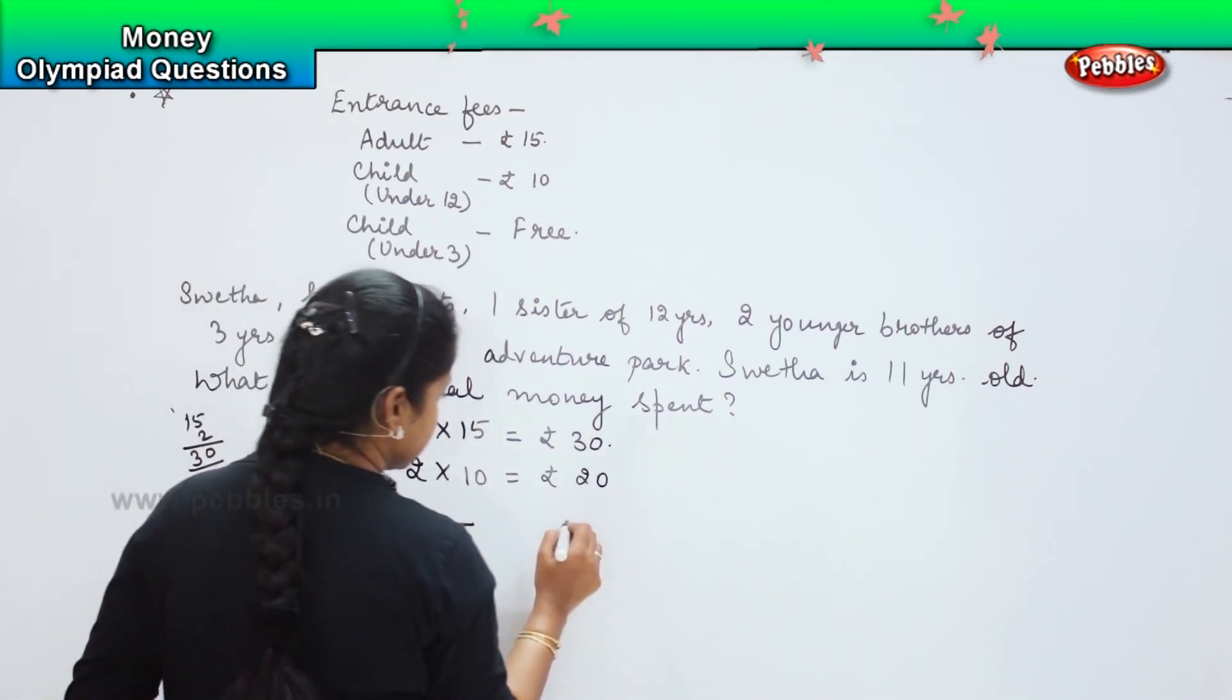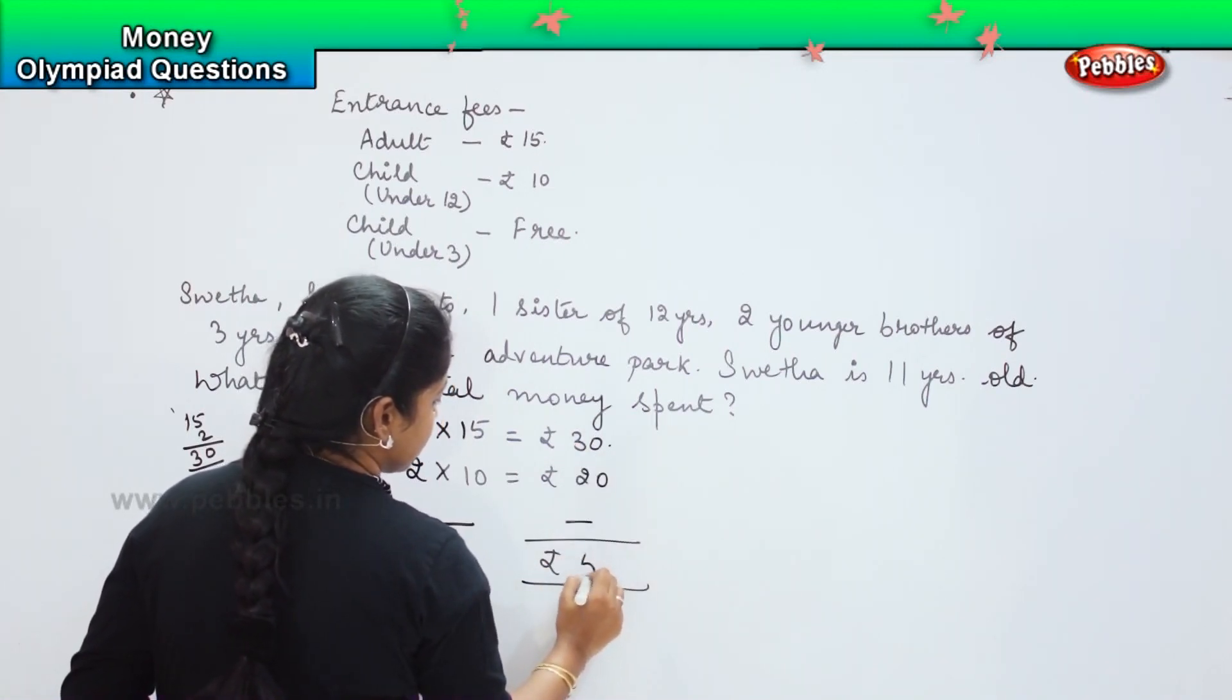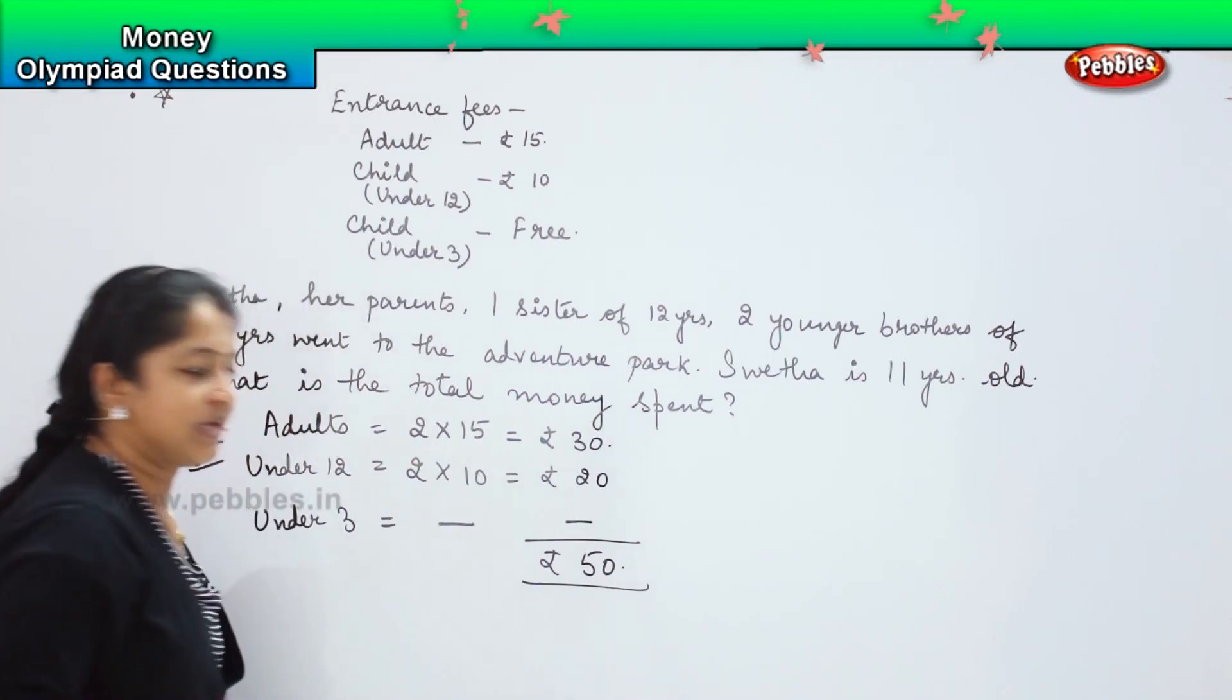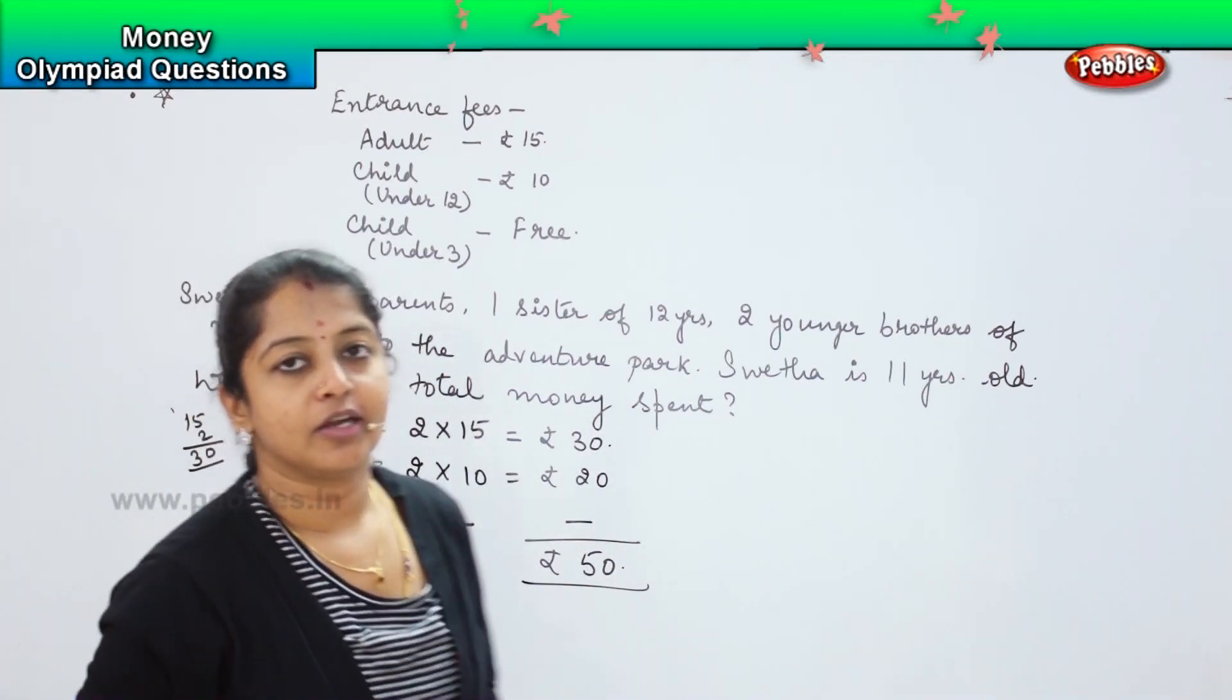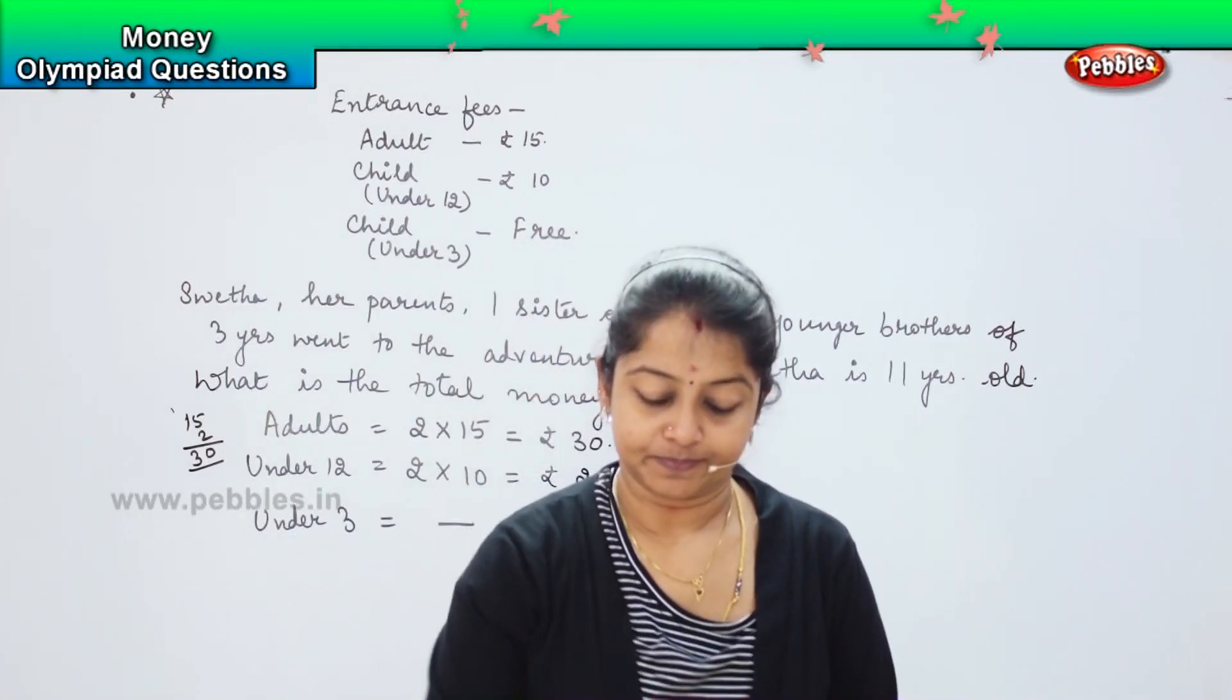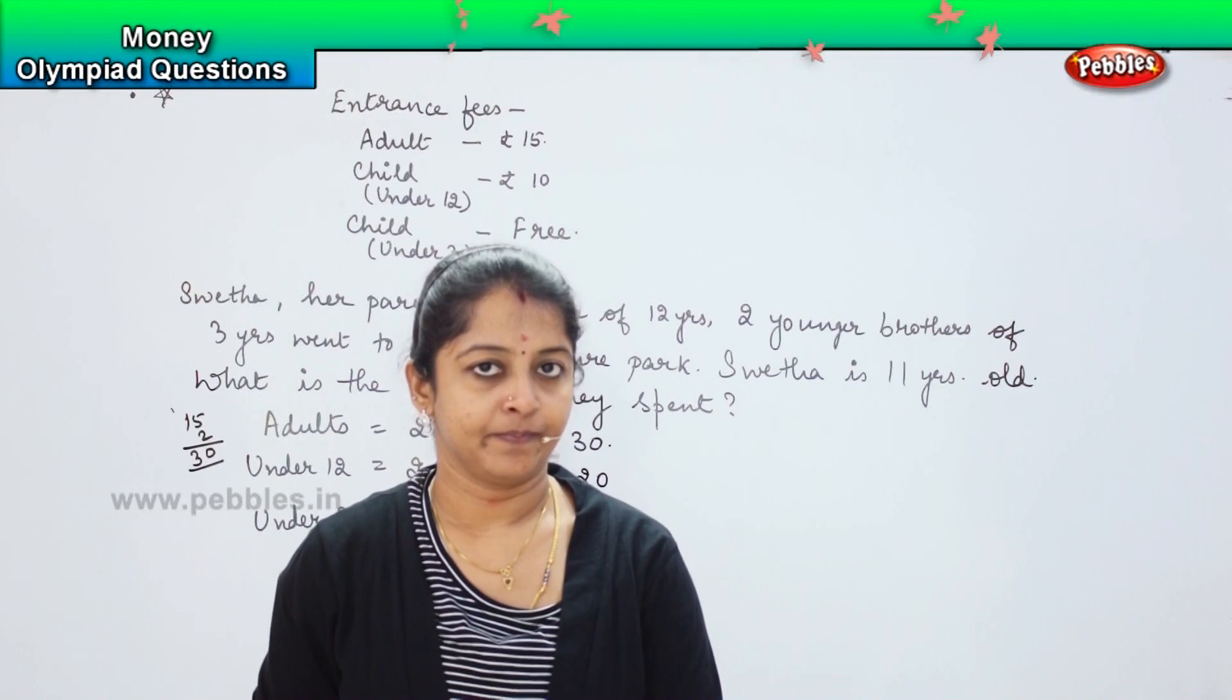Which means that they do not have any fees required, they do not have any tickets required. So what is the total now? This will be nil. So my total will be 3 plus 2 is 5. So 50 rupees they have spent at the entrance to enter into the amusement park. Is it clear? Did you understand children?